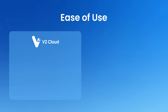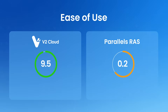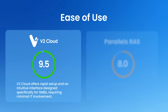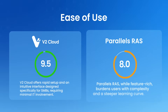Ease of use: V2 Cloud scores 9.5 versus Parallels RAS's 8. V2 Cloud offers rapid setup and an intuitive interface designed specifically for SMBs, requiring minimal IT involvement. Parallels RAS, while feature-rich, burdens users with complexity and a steeper learning curve.